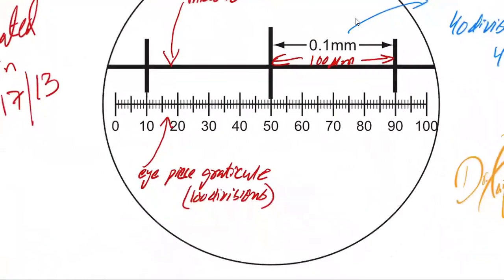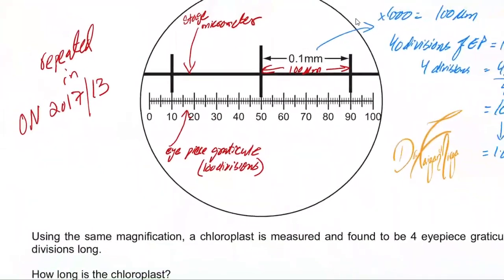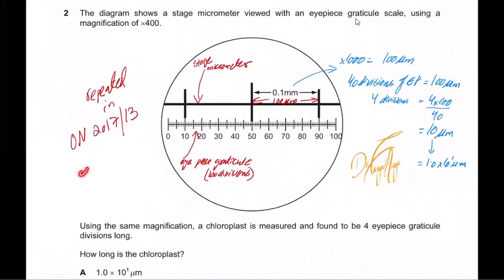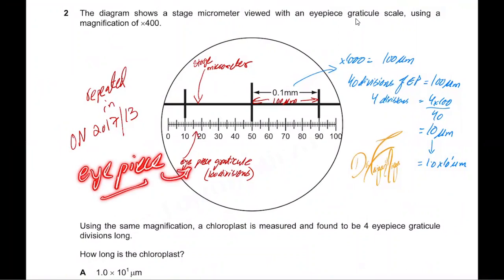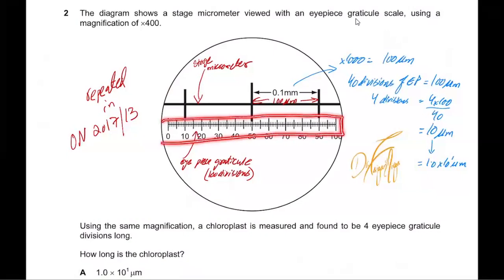An IPS graticule has 100 divisions and is fitted into the IPS of the microscope. When using a light microscope, you fit this IPS graticule — it's a circular glass slide with a scale etched on it — into the IPS, and then insert that IPS back into the light microscope. When you view the specimen placed on the stage, this scale will be seen on top of that specimen.